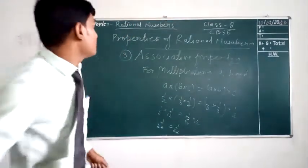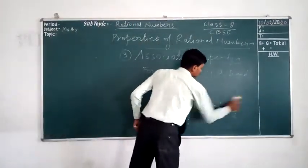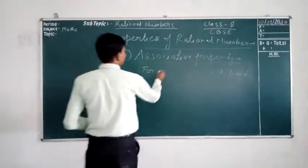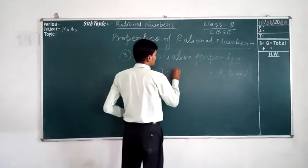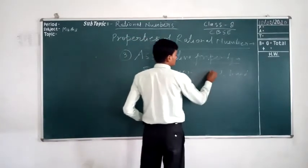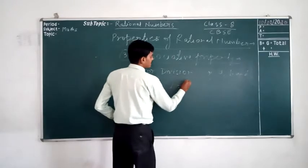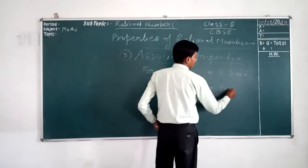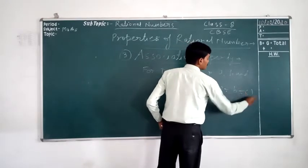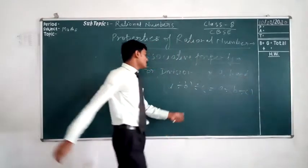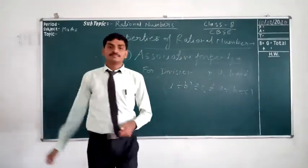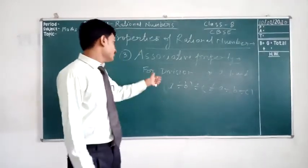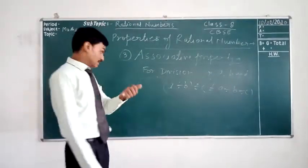Now, come for division. For division, (A ÷ B) ÷ C is not equal to A ÷ (B ÷ C). This will not be equal. So we can say that rational numbers are not associative for division.